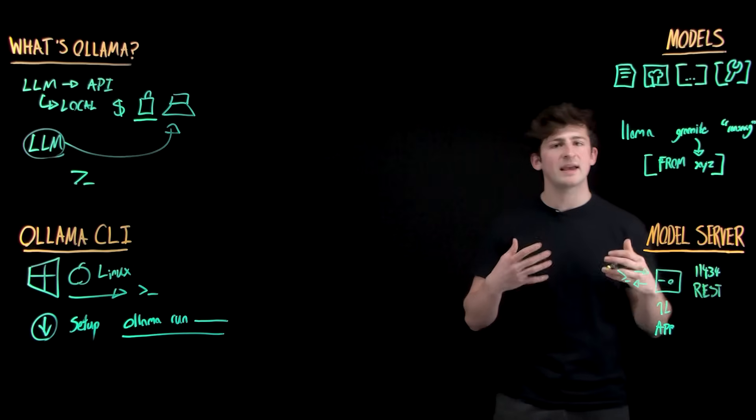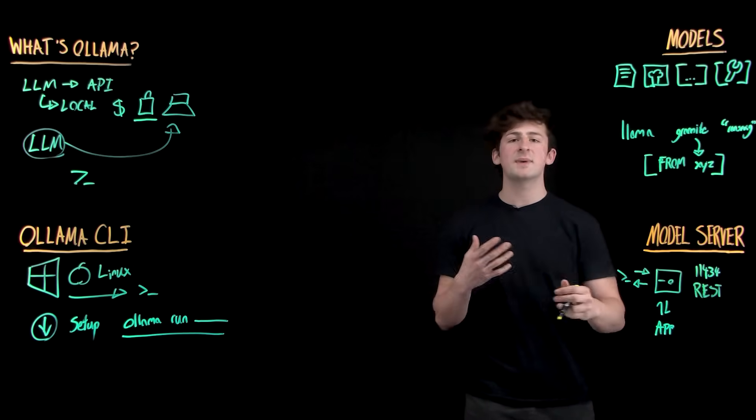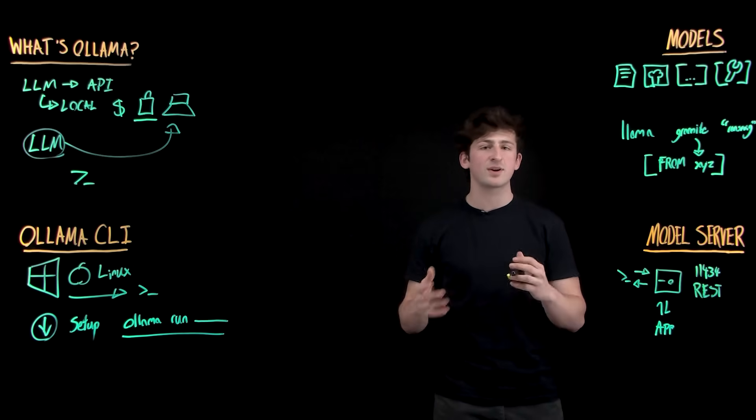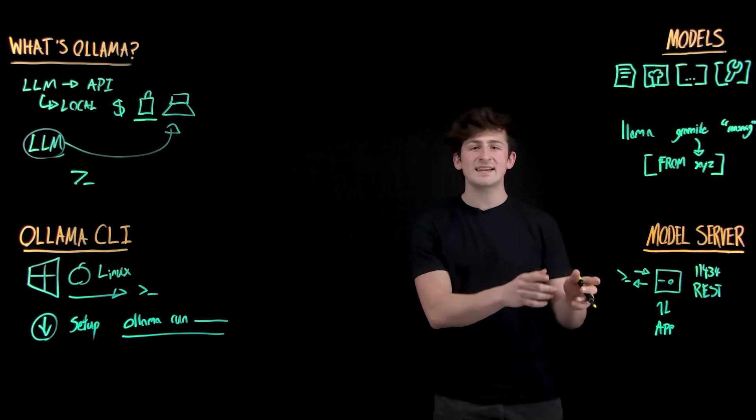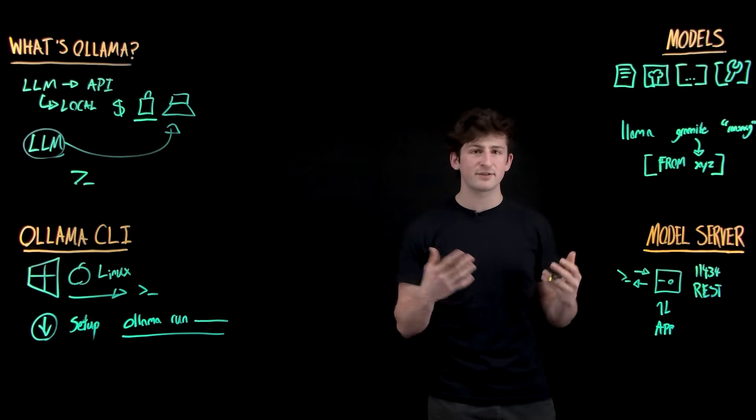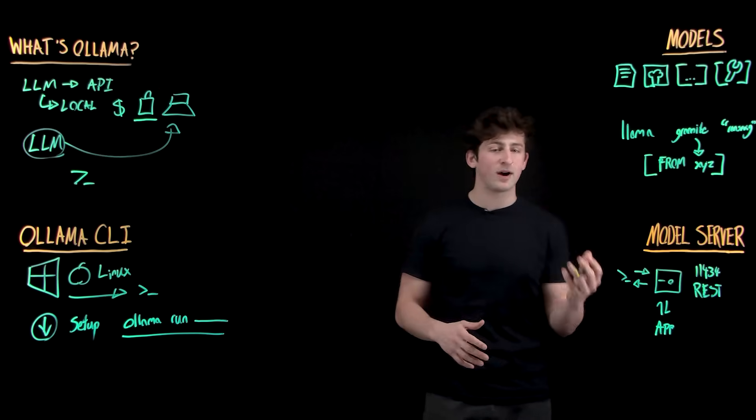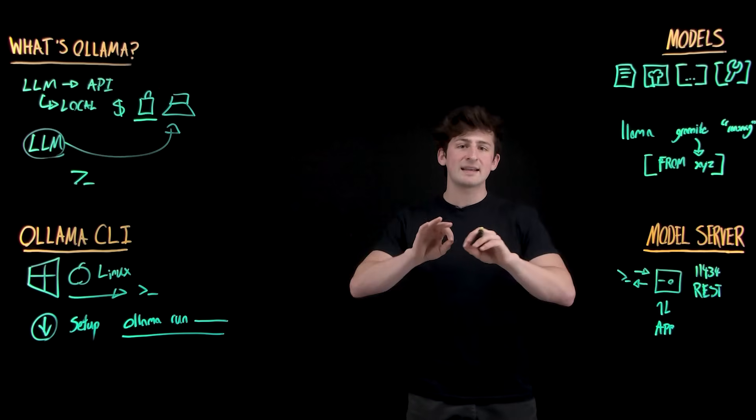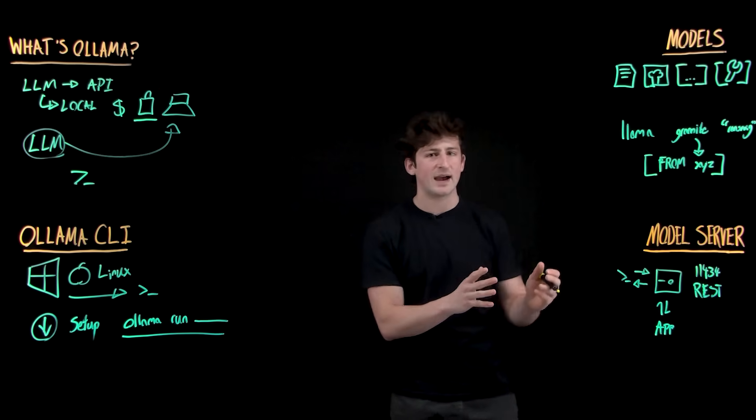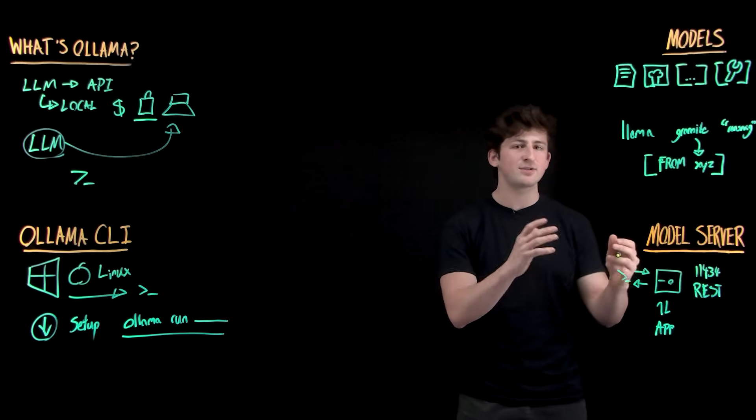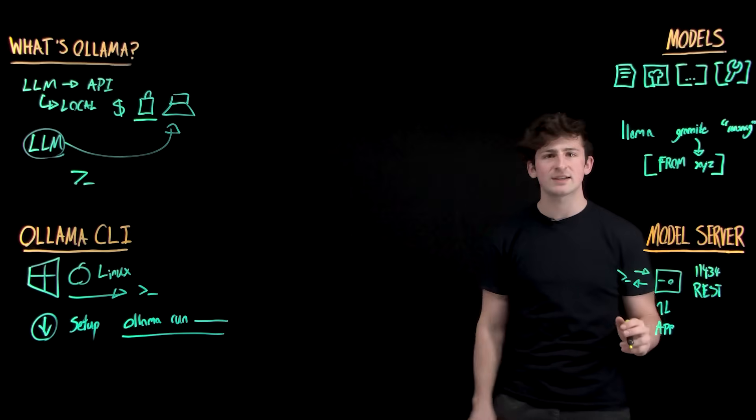It has endpoints and we can make that request similar to how we would make a request to any other service that's running on our machine. And right here is the simplicity of OLAMA for developers. It lifts the weight of having to run the model in your application and it abstracts the model as an API. So, you make that request and you get that response back all locally on your machine.